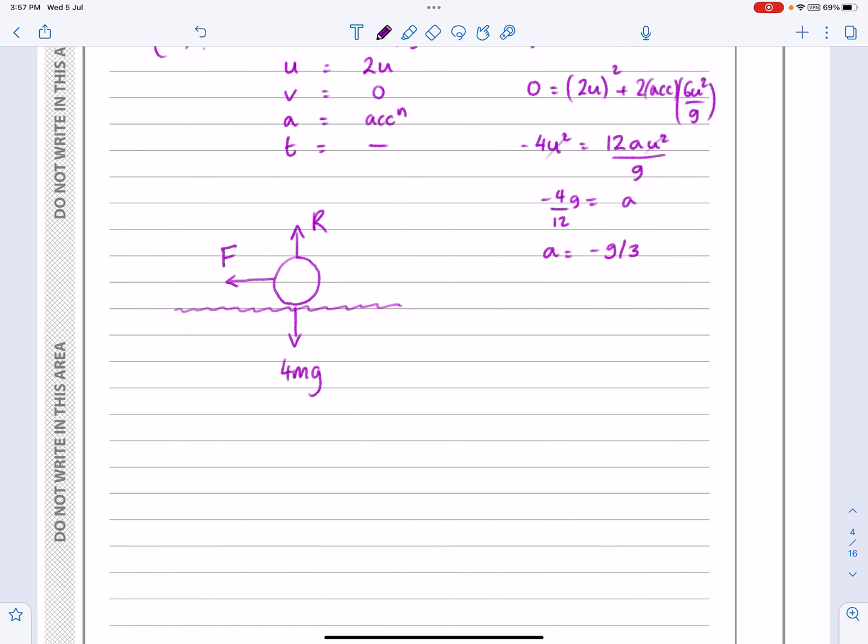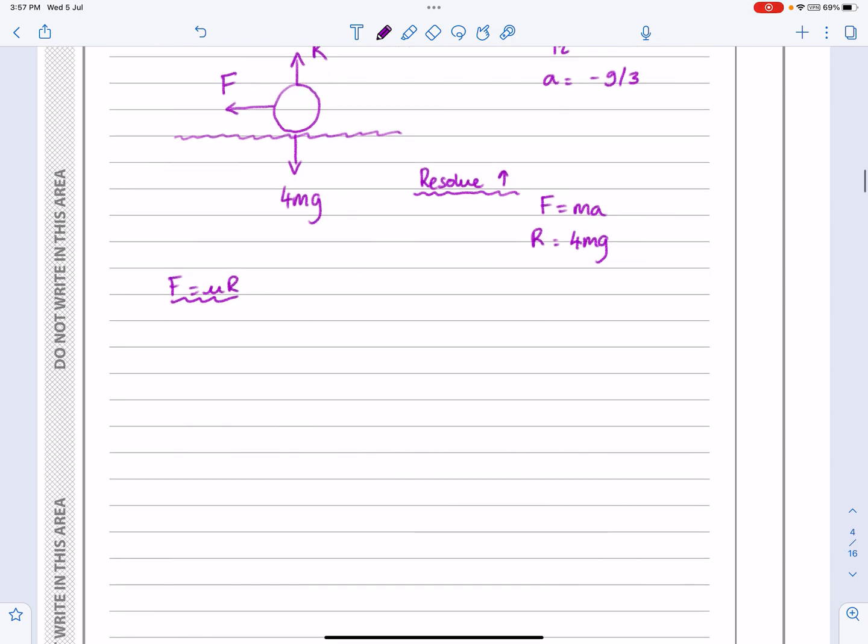So the way I do these questions is I resolve vertically first. And when I resolve vertically, I've just got these two forces acting. And I know they're going to balance each other out. They're in equilibrium. So I tend to say F equals MA, but then I just jump straight into saying R equals 4MG. It's up to you the order in which you do these. I tend to do F equals mu R next. But I know I'm basically going to get a couple of different formulae here and just need to combine them. F equals mu R is nice and simple now. So F is going to be mu times 4MG.